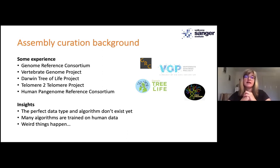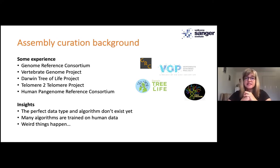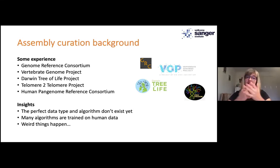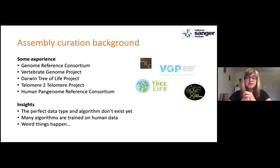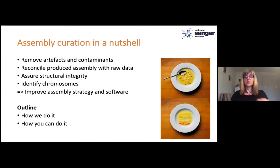Looking after all these assemblies, the most important insight is that the perfect data type and the perfect algorithms sadly don't exist yet. There is no single sequencing technology that you can use exclusively and get a really good assembly. If you combine technologies, the algorithms and strategies are currently not sufficient to give you a largely flawless assembly. In addition, if you're not working on human assemblies, many algorithms are trained and optimized for use on human data, so you've got a bit of a problem there.